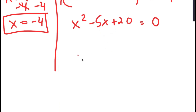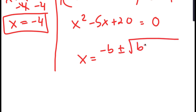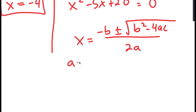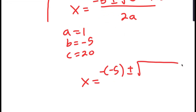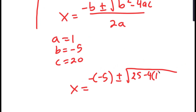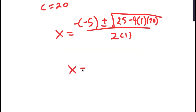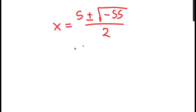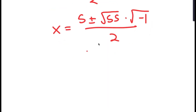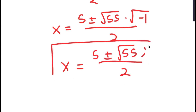To solve x squared minus 5x plus 20 equals 0, I'll use the quadratic formula: negative b plus or minus the square root of b squared minus 4ac, all over 2a. Here a equals 1, b equals negative 5, and c equals 20. So x equals 5 plus or minus the square root of 25 minus 80, all over 2, which equals 5 plus or minus the square root of negative 55, over 2. Rewriting, that's 5 plus or minus the square root of 55 times i over 2, where i is the square root of negative 1. So these are two more solutions to the equation.